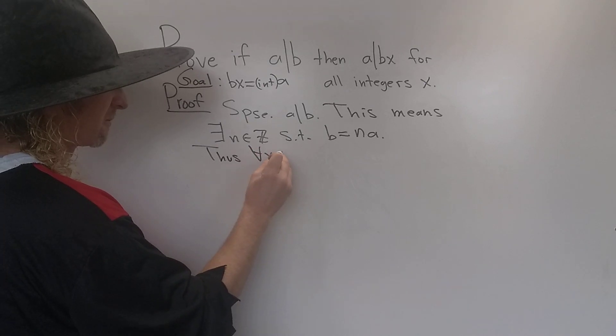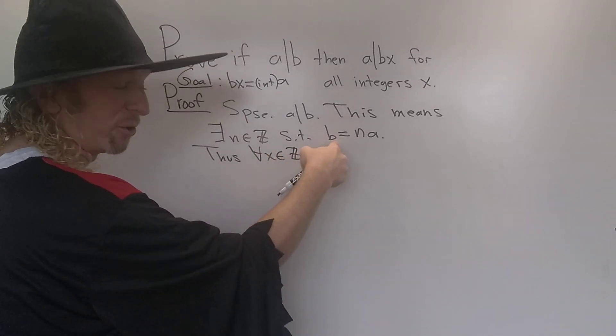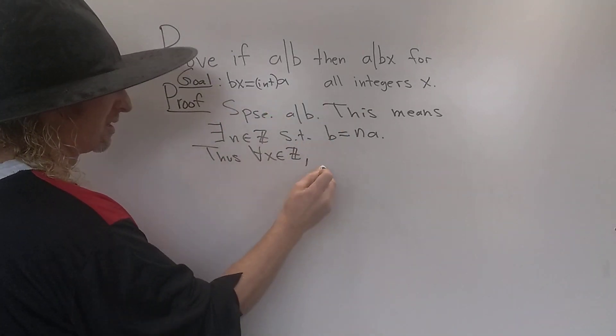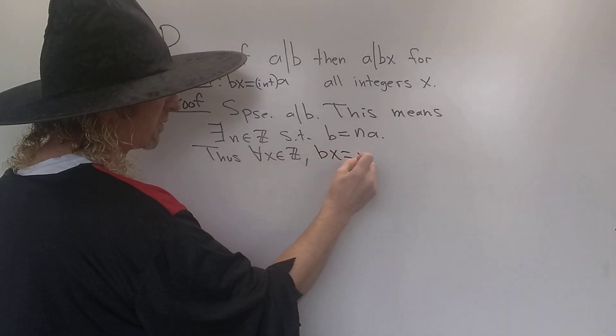for all x in Z, we can multiply both sides by x to get this. So bx equals nax.